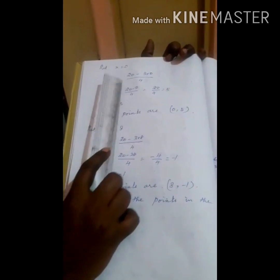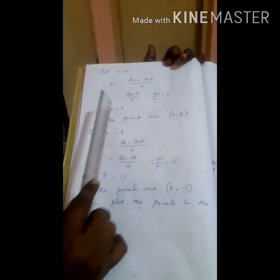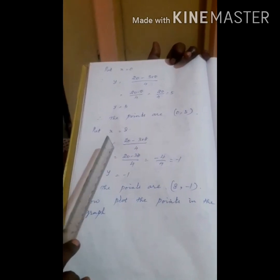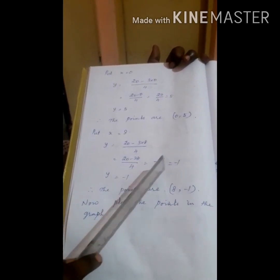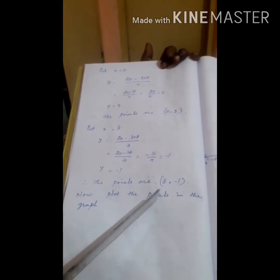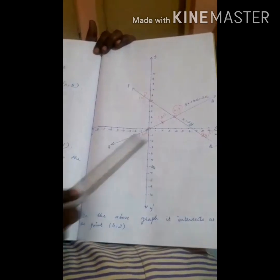Now put x equal to 8: y equals (20 minus 24) by 4, which is minus 4 by 4, equal to minus 1. Therefore y is equal to minus 1 and the points are (8, minus 1). Now we plot all the points on the graph. For Equation 1, x equal to 2y, and for Equation 2, 3x plus 4y equal to 20, both lines intersect at the point (4, 2).